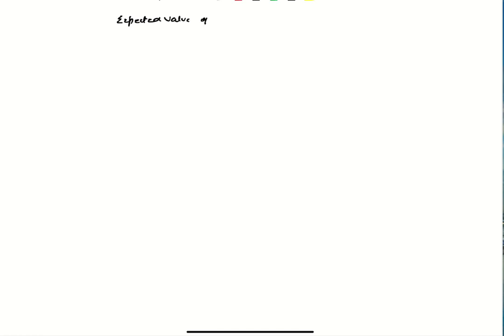What is the expected value of a continuous variable? For a discrete variable it was the sum of x·f(x). Here we can't just sum, so we have to do integration. The integral of x·f(x)·dx gives you the expected value of x, and it has to be from negative infinity to positive infinity.